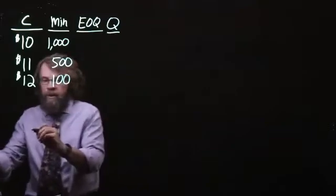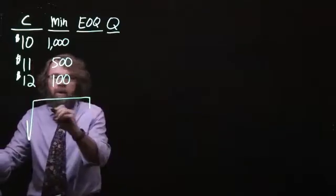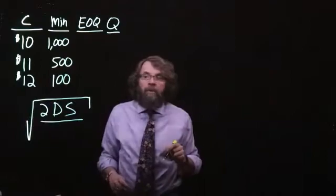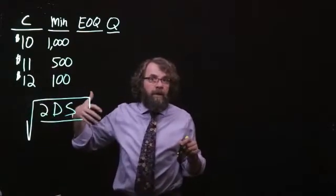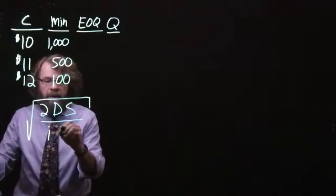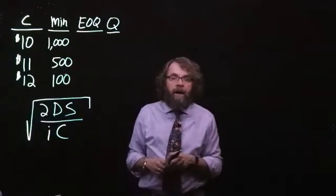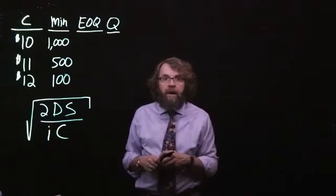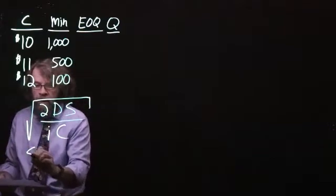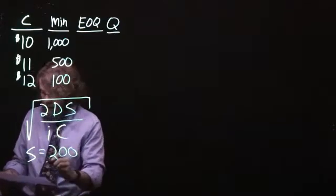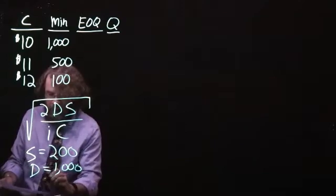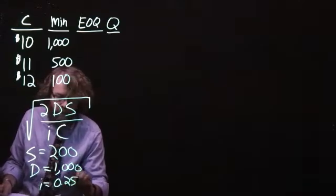The place we will start is with the EOQ formula. We will take two times annual demand times the setup or ordering cost and divide by the holding cost. But because the cost of the unit is going to change based on our quantity, we will use a holding cost that is proportional to the value of the item, where i is the interest rate and c is the cost of the item. The other pieces of information we need: the setup or ordering cost is $200, annual demand is 1,000, and the interest rate is 25 percent.